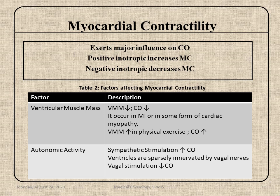Ventricular muscle mass will be increased if you do physical exercise — that's why physicians advise exercise, as it can increase ventricular muscle mass and cardiac output. Now autonomic activity: sympathetic stimulation increases cardiac output. Ventricles are sparsely innervated by the vagal nerve, so vagal stimulation does not have much significance on cardiac output, though it can decrease it. Sympathetic stimulation increases cardiac output.